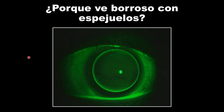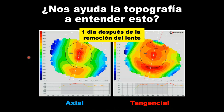Let's look at the topography. Let's take the lens off and assess the eye shape underneath this lens. Here we see the patient immediately after removal of their rigid contact lens. On the left you have the axial interpretation of the eye, on the right the tangential interpretation — both the same eye just interpreted two different ways.